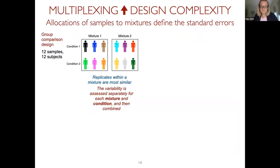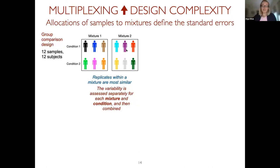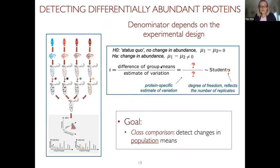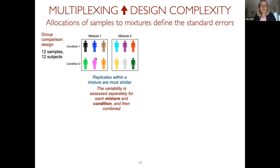This depends on the design. In a group comparison experiment with two mixtures, each containing three subjects from one condition and three from another, the replicates acquired within one mixture are more similar to each other than replicates between mixtures — because within the multiplexing we share whatever artifacts happened within the instrument. A separate mixture is a separate labeling and separate data acquisition. So when constructing the signal-to-noise ratio, we want to separately characterize the variability within each mixture, then combine that and compare the conditions.